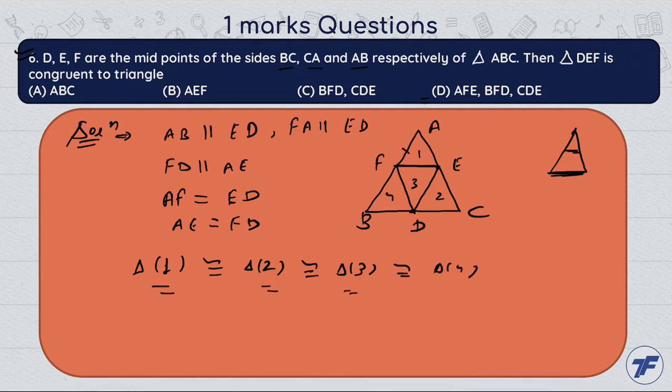Yarni AF equal to ED, AE equal to FD. Similar type se, hum baki ko bhi prove kar saktay hai. But option hai humare paas, toh huma directly humaara D option kya hoa? True.